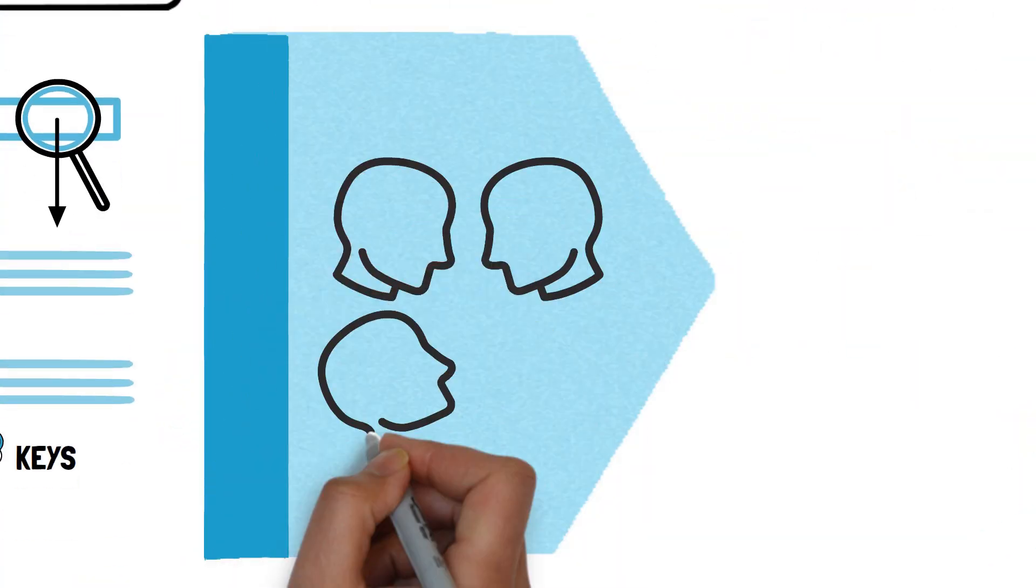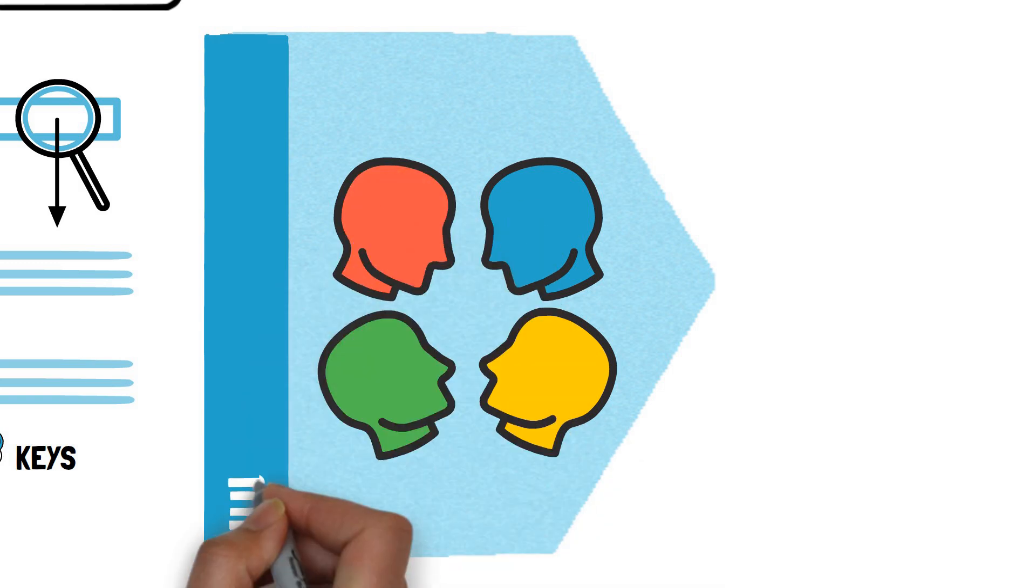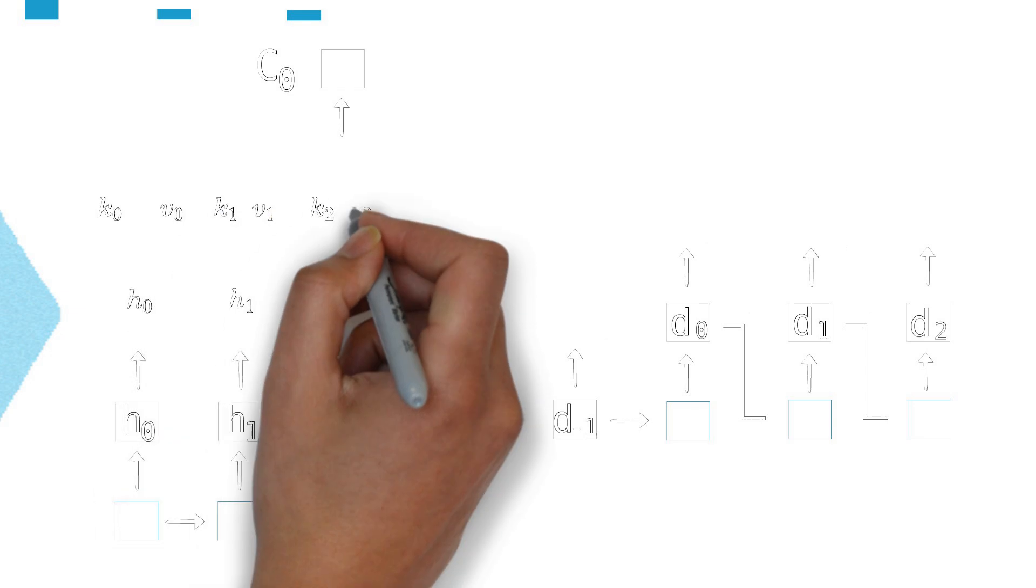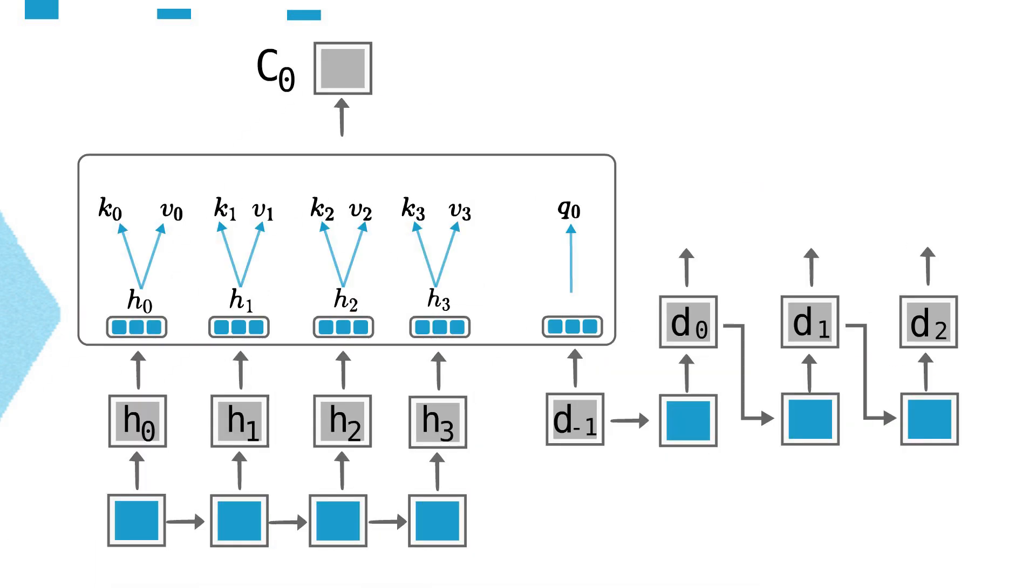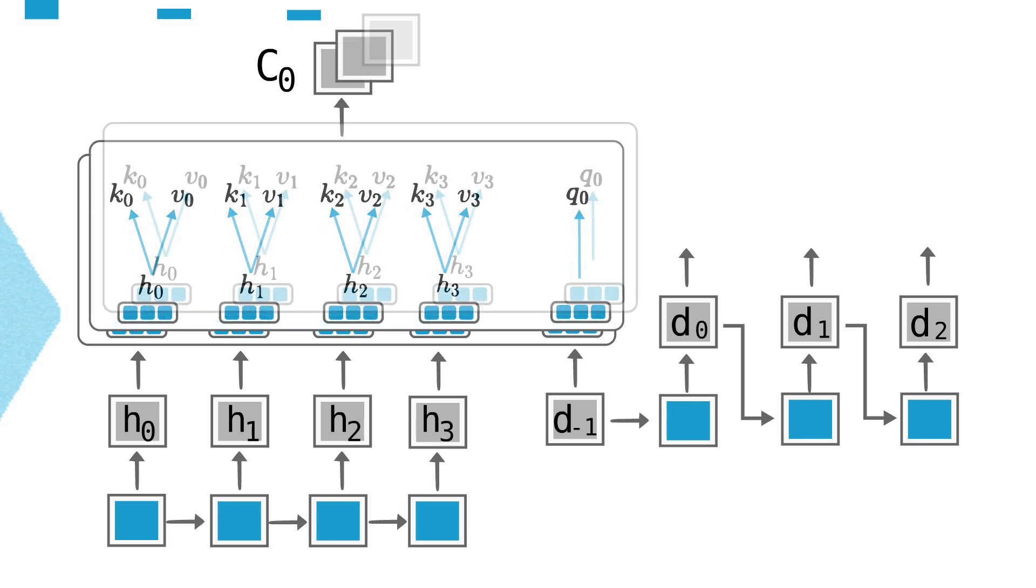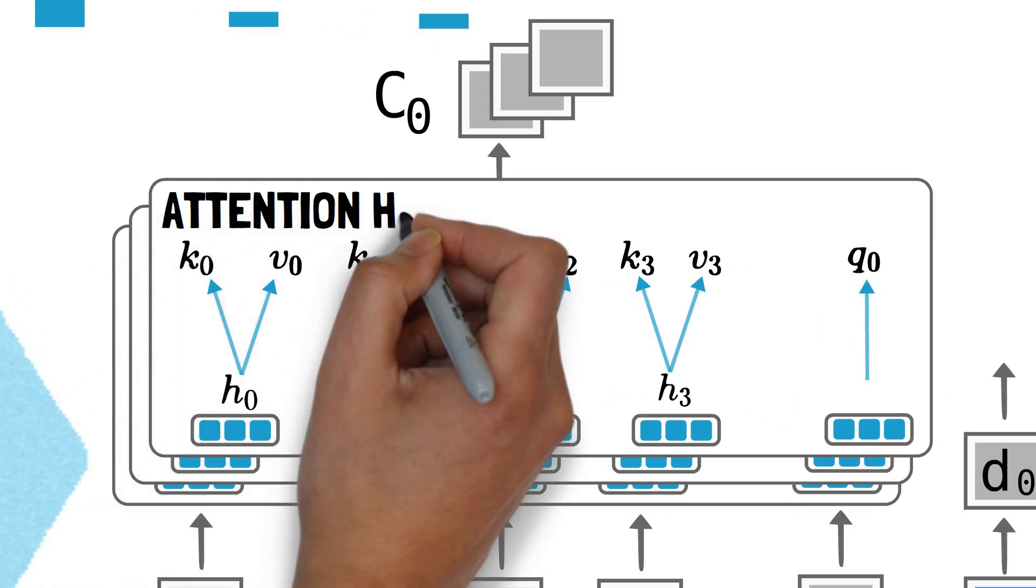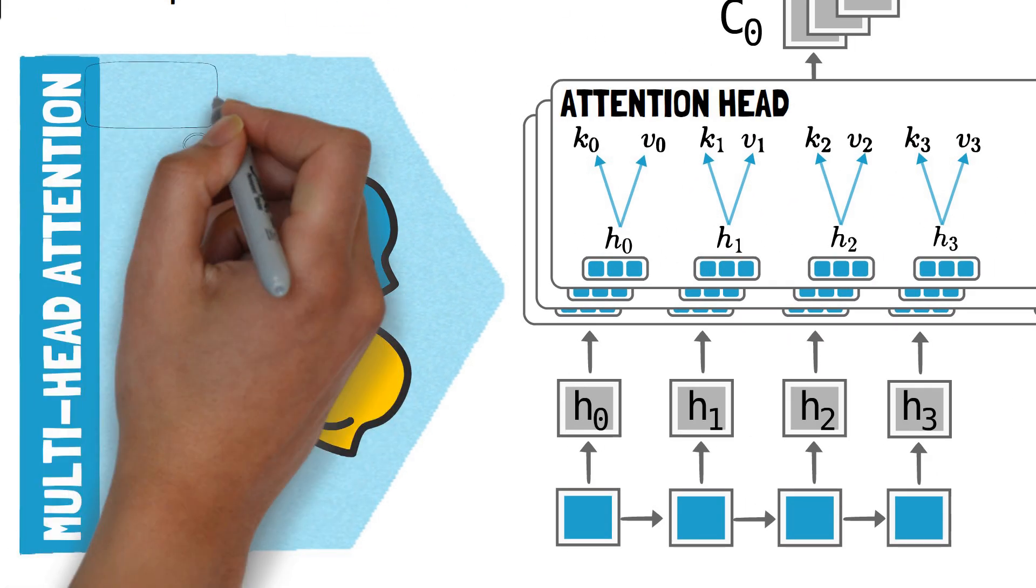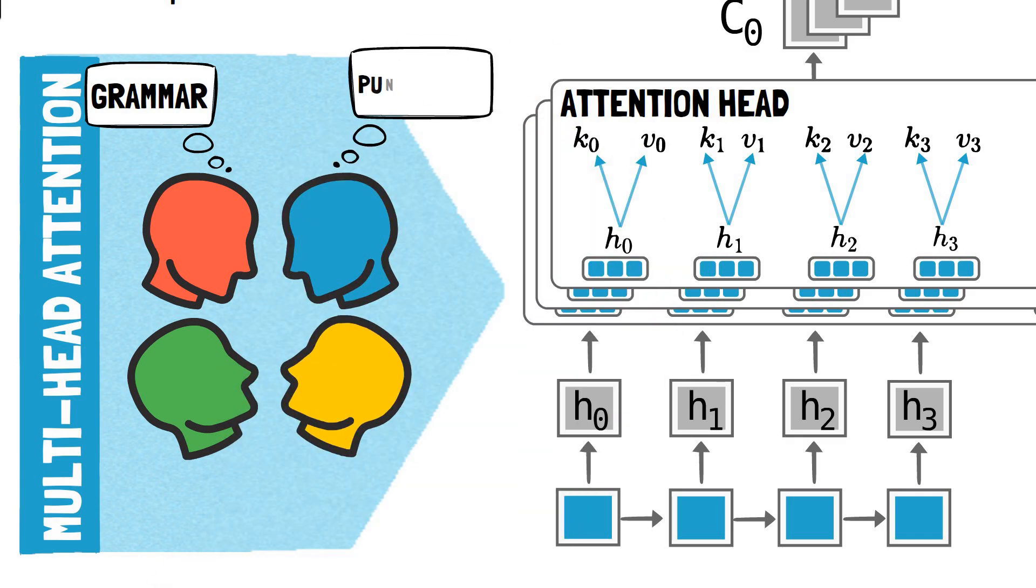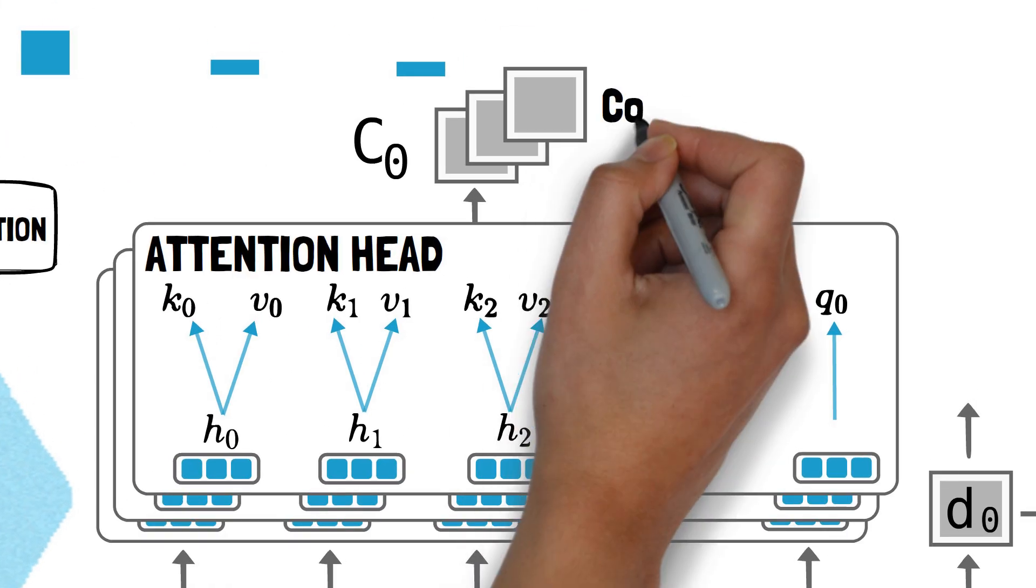An additional widespread improvement to the attention mechanism is called multi-head attention. Multi-head attention is a technique where instead of using just one set of key query and value, we use multiple sets at the same time. Each of these key value query groups is called an attention head. Each head works on its own to focus on different aspects of the input. Each head then produces its own context vectors.